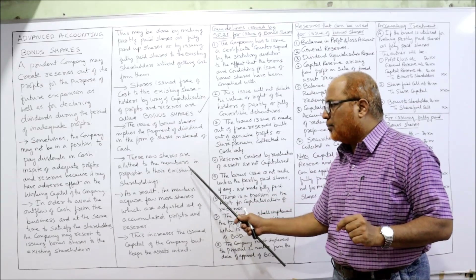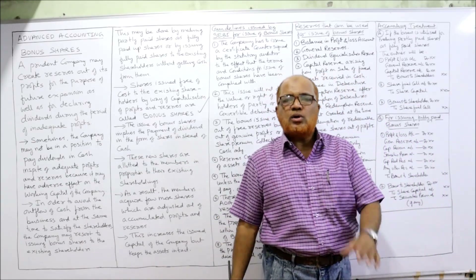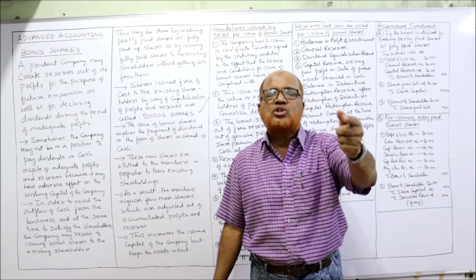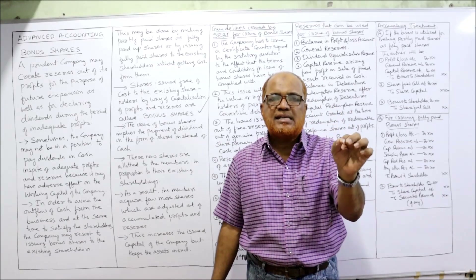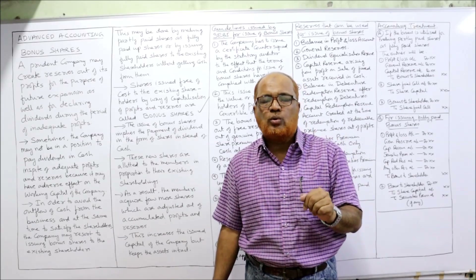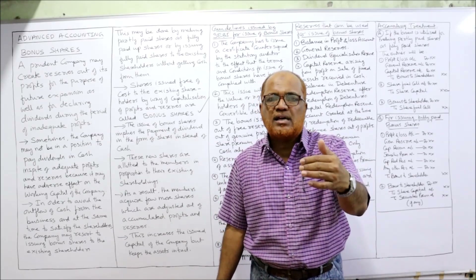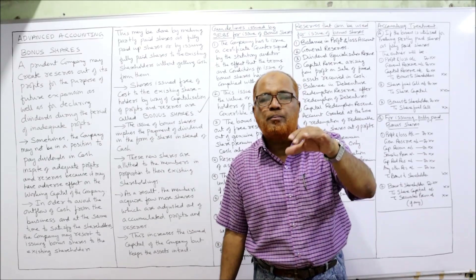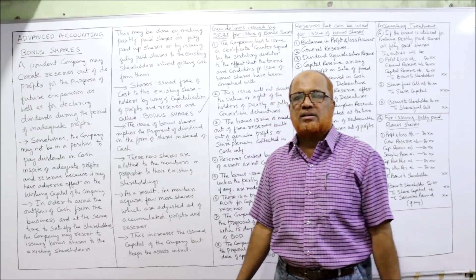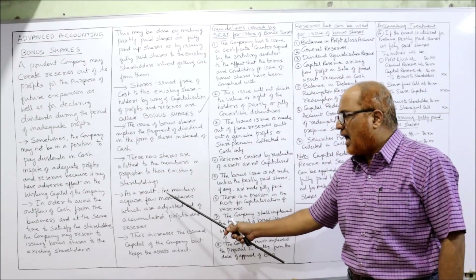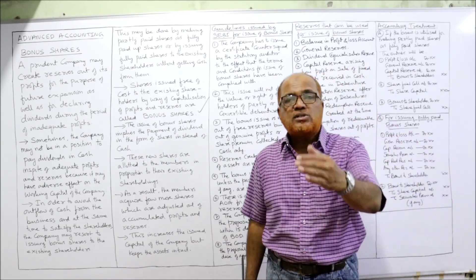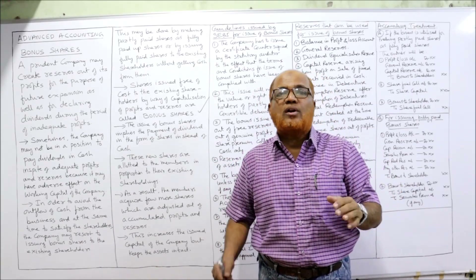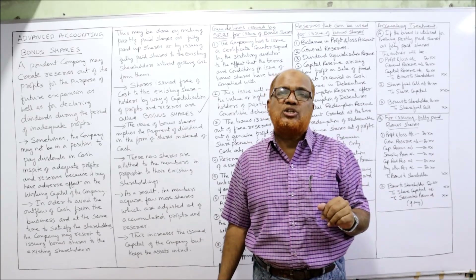The issue of bonus shares is allotted to members in proportion to their existing shareholding. For example, for every 10 shares held, one bonus share will be issued, or for every 20 shares held, one bonus share will be issued. Suppose earlier you had 100 shares — now 20 more shares you got freely. Now you are the holder of 120 shares.